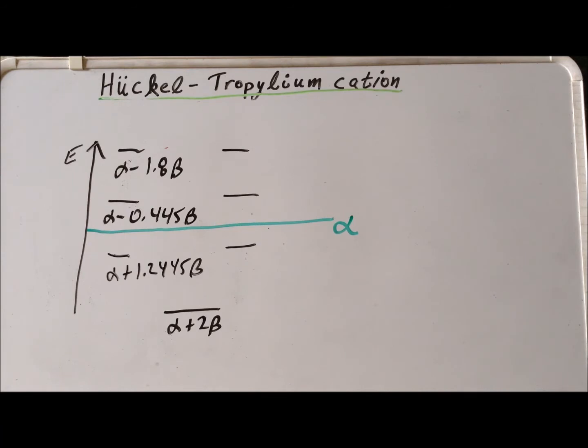Our final step is to assign electrons to the energy levels. And recall just like atomic orbitals, we can stick two electrons into each molecular orbital so long as they have opposite spins by the Pauli exclusion principle. And recall that we have exactly six pi electrons in tropylium. It originally had seven, but in the process of becoming a plus one charge, it lost one electron. So it went from seven electrons in the pi system to six. So we have six electrons to go here.